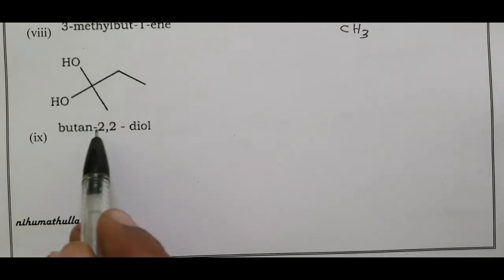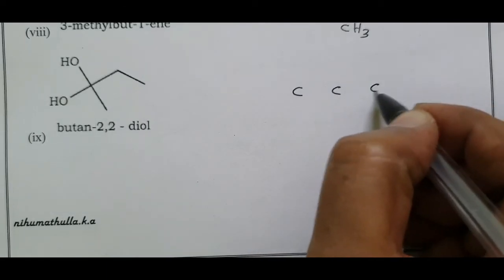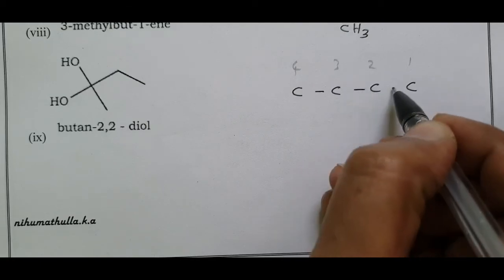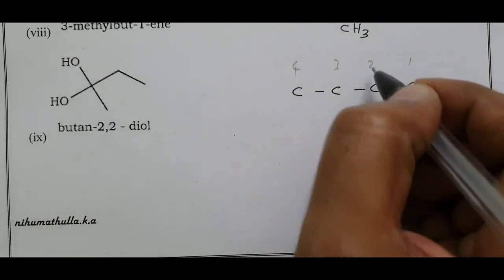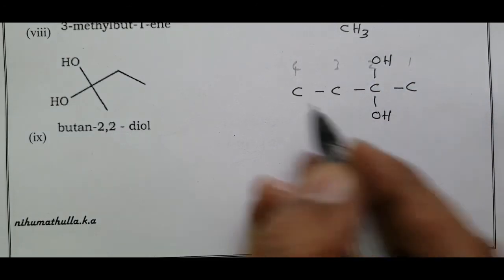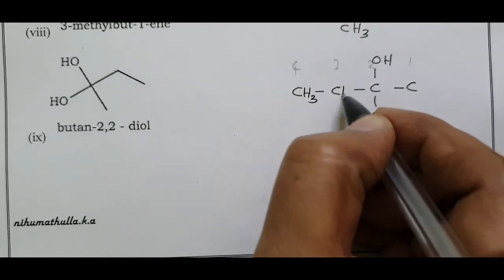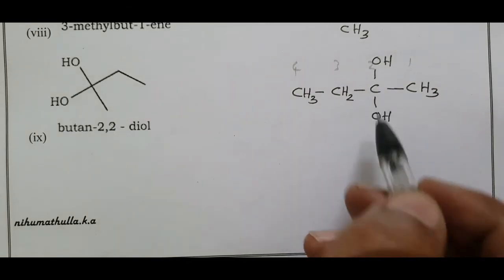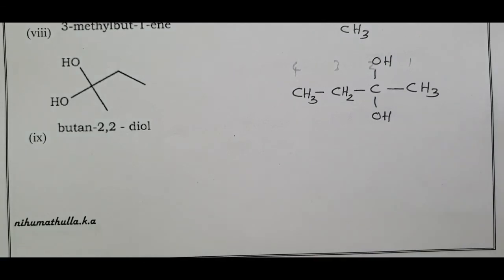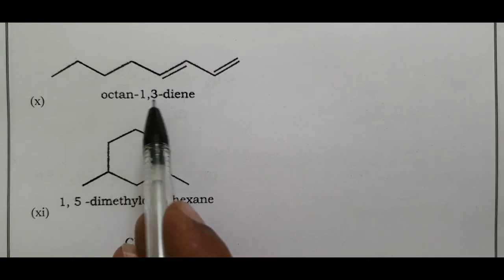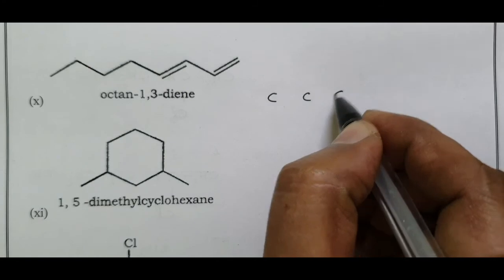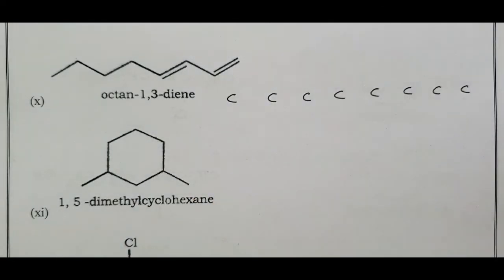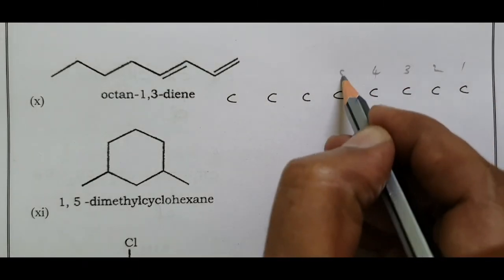Butane-2,2-diol: butane has four carbons numbered 1, 2, 3, 4. Two hydroxyl (–OH) groups are both attached at carbon two, giving butane-2,2-diol.